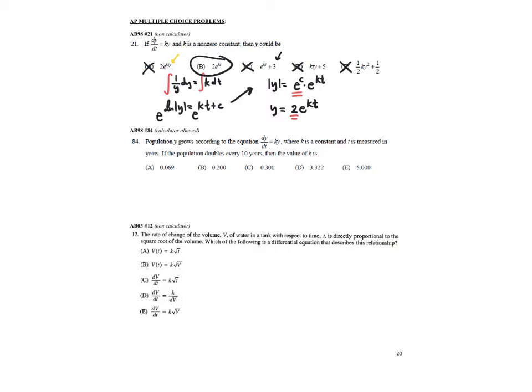Let's look at 84. Population y grows according to the equation dy/dt equals k times y, where k is a constant, t is measured in years. This is a calculator-allowed question. If population doubles every 10 years, then the value of k is what? Well, we know that the amount of time it takes for a population to double would be equal to the natural log of 2 over k. Therefore, 10 would equal the natural log of 2 over k. And thus, k would equal the natural log of 2 over 10, which I believe comes out to be a.